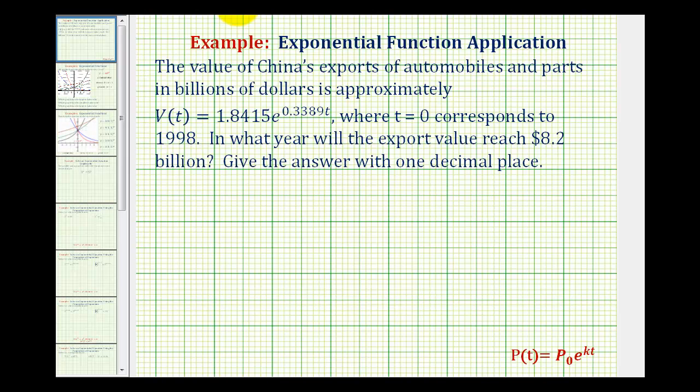The value of China's exports of automobiles and parts in billions of dollars is approximately v(t) given by this exponential equation, where t equals zero corresponds to 1998. We want to know in what year will the export value reach $8.2 billion, and we're asked to give the answer with one decimal place.